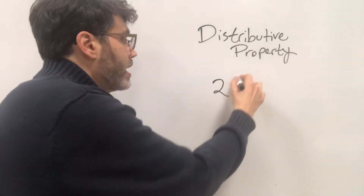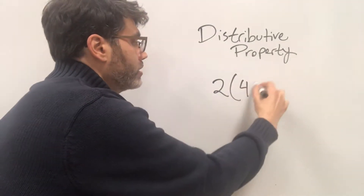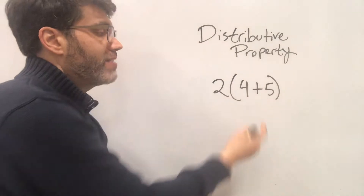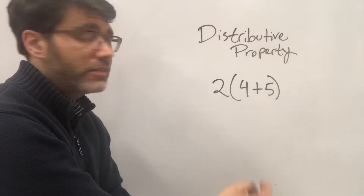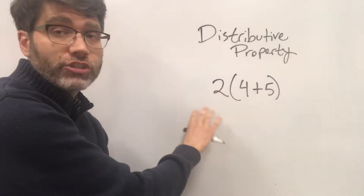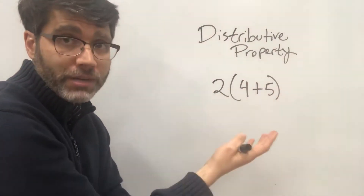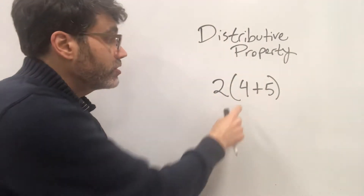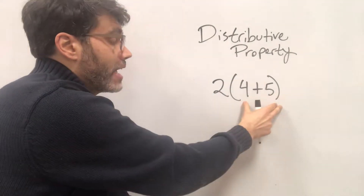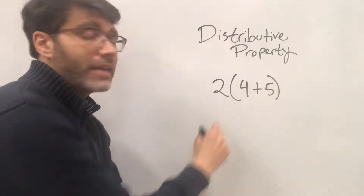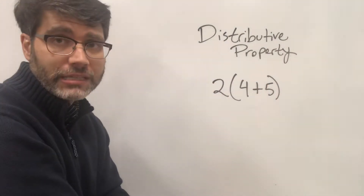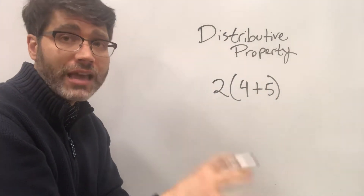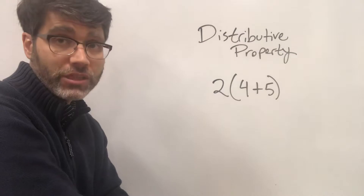Let's say that we had an expression where 4 plus 5 is in the parentheses, and all of that is going to be multiplied by 2. PEMDAS says we do the parentheses first. 4 plus 5 is 9, and 9 times 2 is 18. So this expression is equal to 18. I'm going to show you that you can get the exact same result using the distributive method.